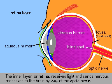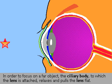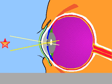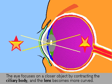The lens of the eye is elastic and its curvature can be changed by the ciliary body to focus on a particular object. To focus on a far object, the ciliary body relaxes and pulls the lens flat. To focus on a near object, the ciliary body contracts and the lens becomes more curved.